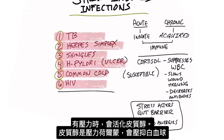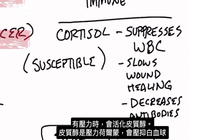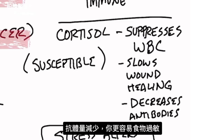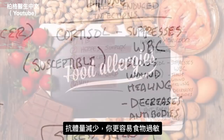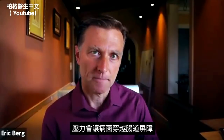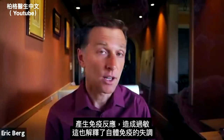When you go through stress, you activate cortisol — the stress hormone that suppresses white blood cells. This explains why under stress you don't have that barrier as much anymore, giving you a lowered immune system. You're more susceptible to pulling in pathogens, you have decreased antibodies, and you're more susceptible to food allergies. Stress also alters the gut barrier, which allows pathogens to invade, creating an immune reaction and allergies.